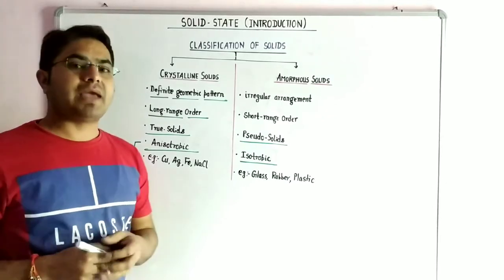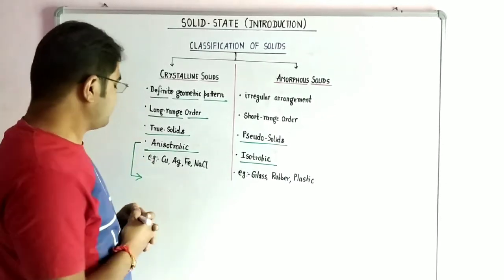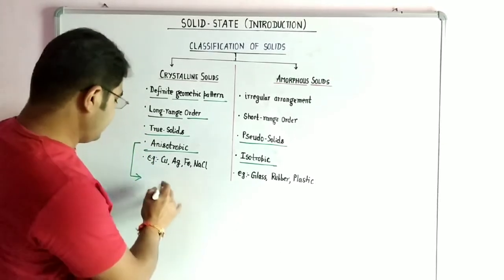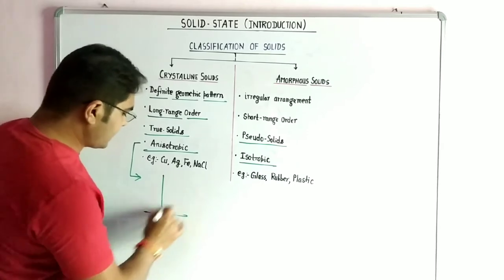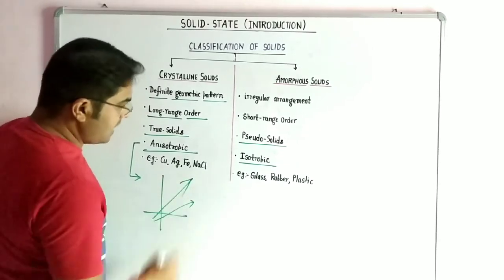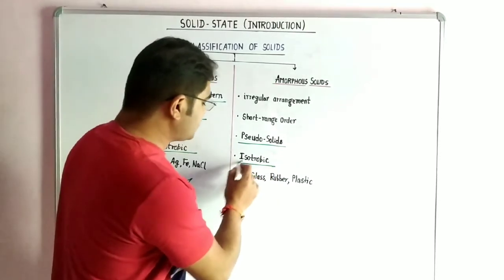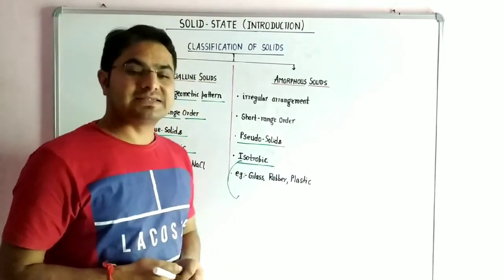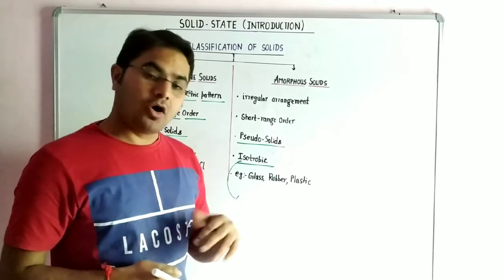mechanical conductance and refractive index. Like these physical properties have different values in different directions. On the other hand, isotropic behavior of amorphous solids, they have same physical property in all directions.